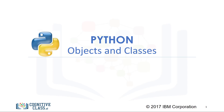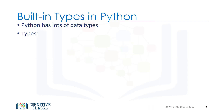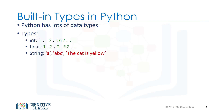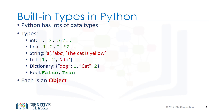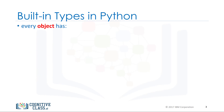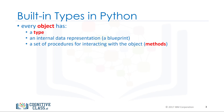In this module we are going to talk about objects and classes. Python has many different kinds of data types: integers, floats, strings, lists, dictionaries, booleans. In Python, each is an object. Every object has the following: a type, an internal representation, and a set of functions called methods to interact with the data. An object is an instance of a particular type.